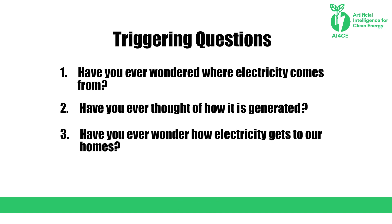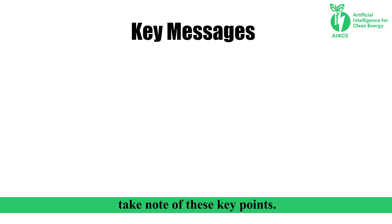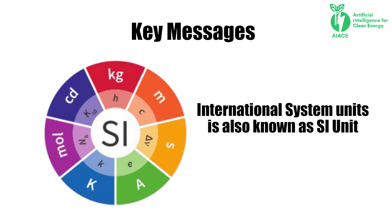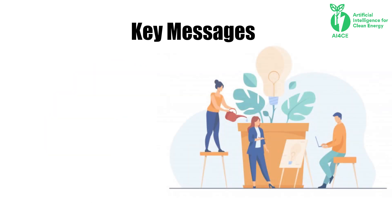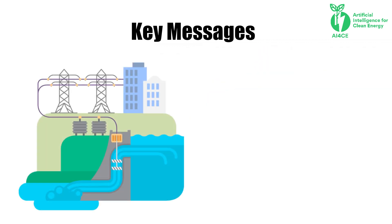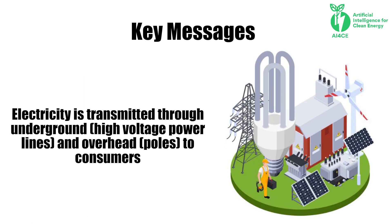Hooray! We have now come to the end of this module. Take note of these key points: one, International System of Units is also known as SI units; two, electricity is the essential source of our growth; three, electricity is produced from massive generating plants situated far from consumers; four, electricity is transmitted through underground high voltage power lines and overhead poles to consumers.